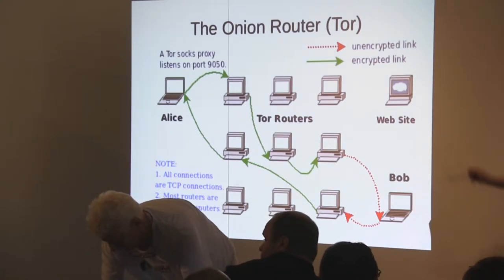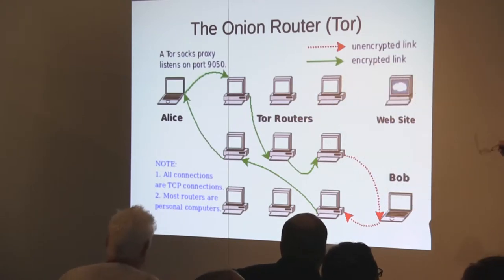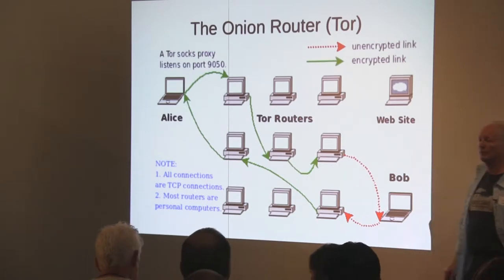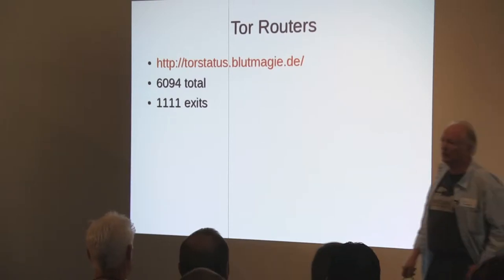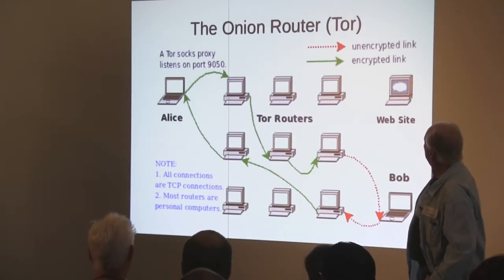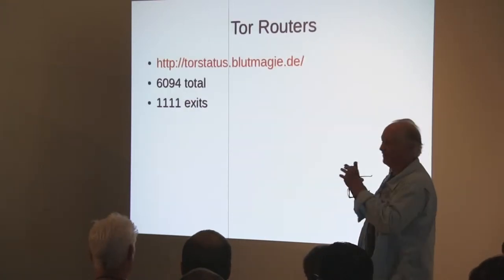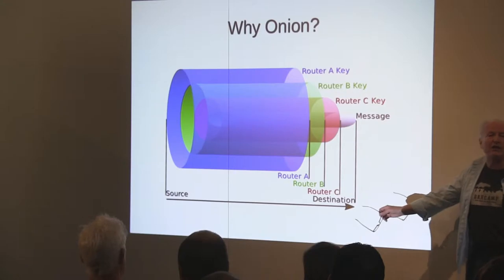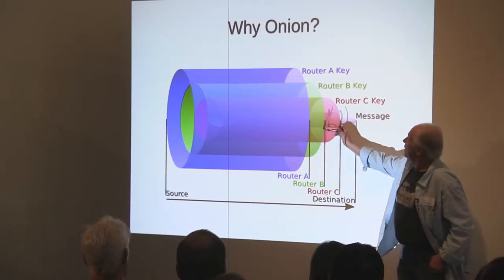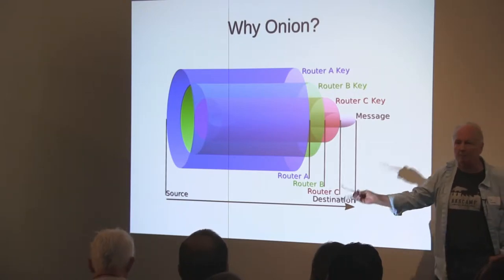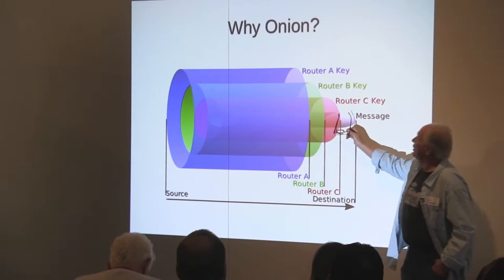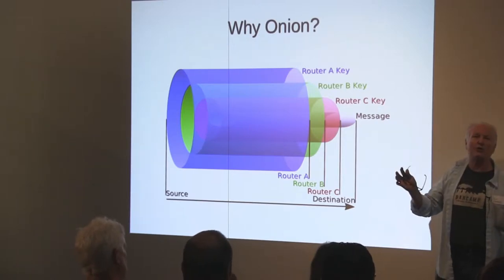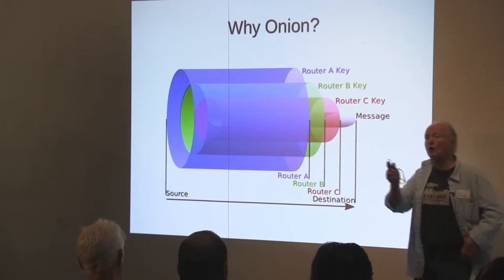You bounce around inside the network until you finally reach an exit point — an exit relay, that's what it's called — and you get to your website. To keep this anonymous, between each of these relay nodes you have a separate key. There's an encrypted link between all of them. That's why they call it an onion, because there are layers. Breaking one code doesn't do a thing for you. You have to go down through all the layers until you hit the core.